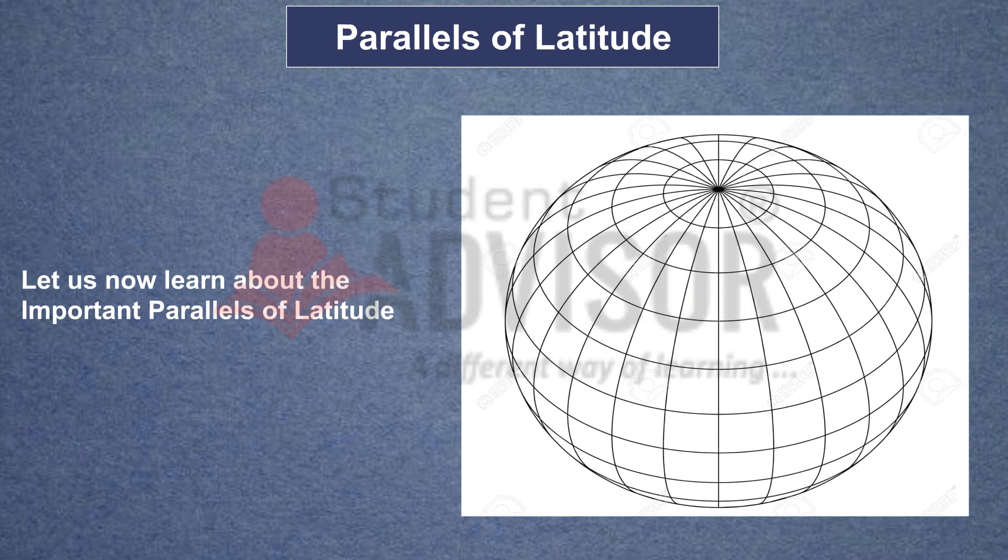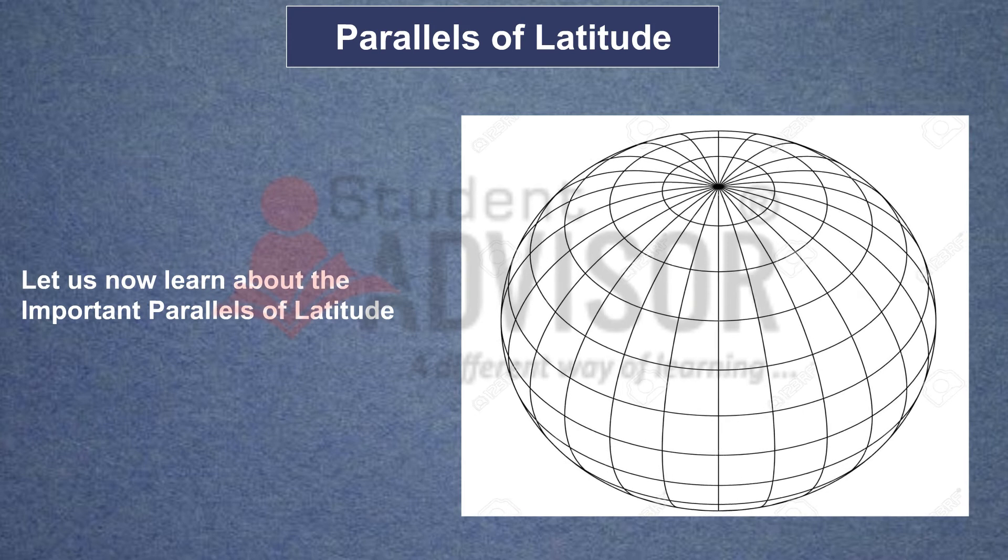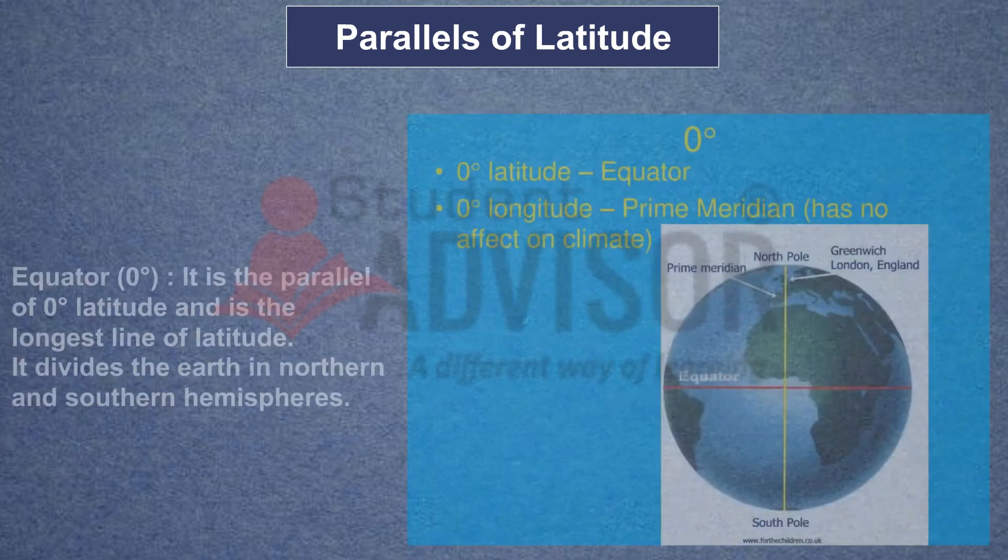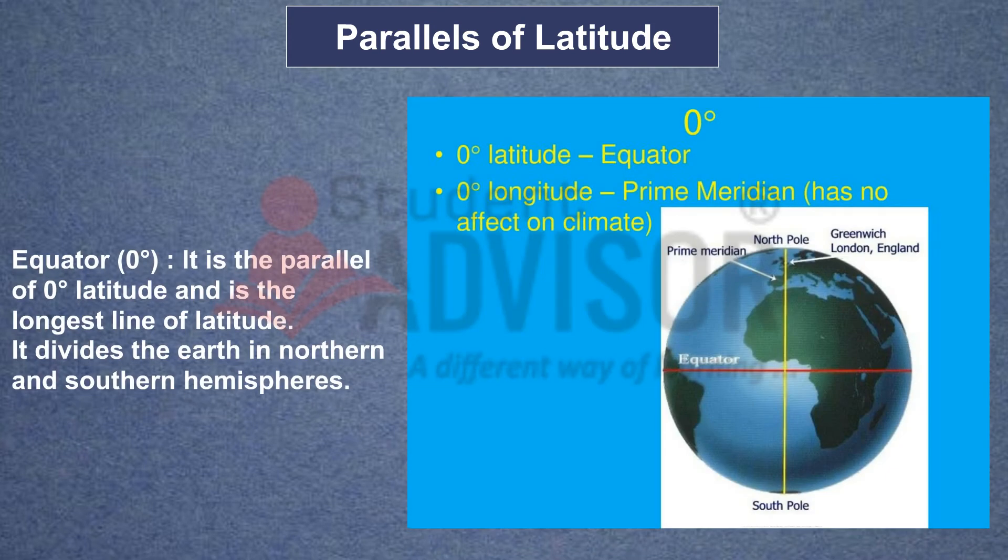Let us now learn about the important parallels of latitude. Equator zero degree. It is the parallel of zero-degree latitude and is the longest line of latitude. It divides the Earth in northern and southern hemispheres.